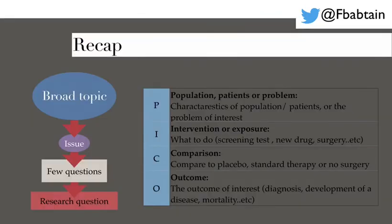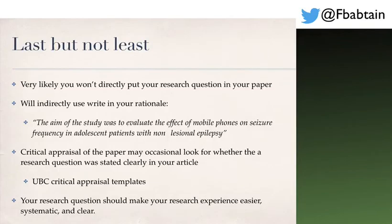To recap: when coming up with a good research question, start broad and tackle one issue of that broad topic. Propose a few research questions, then settle on what you think is the best one. Apply the PICO formula as a guide — who is your population, what are you doing, what are you comparing them to, and what is your overall outcome? Last but not least, you likely won't directly state your research question in your paper.